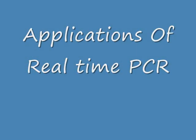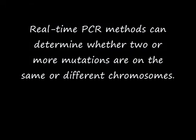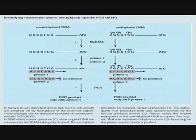Applications of real-time PCR: the method can determine whether two or more mutations are on the same or different chromosome. It is also used for DNA damage measurement, radiation exposure assessment, in vivo imaging of cellular processes, mitochondrial DNA studies, methylation analysis, reduction of X chromosome inactivation, and LATE-PCR — a new method for quantitative analysis of target numbers in small samples, adaptable to high-throughput clinical diagnosis, bio-defense, and DNA sequencing.